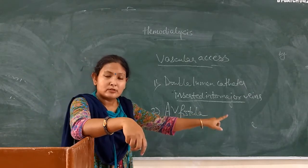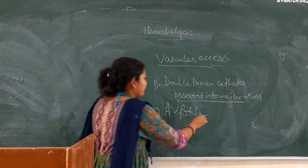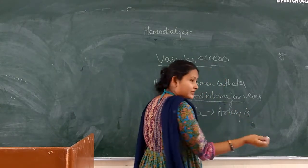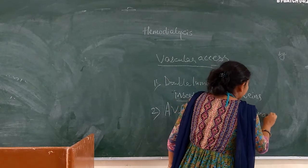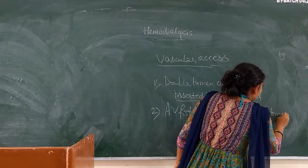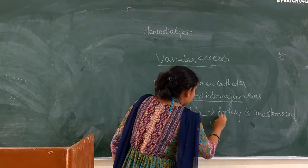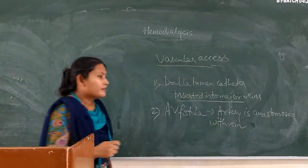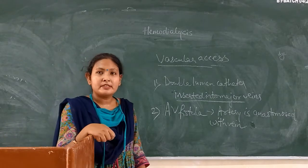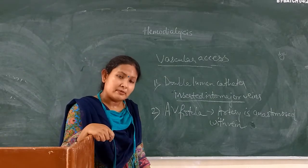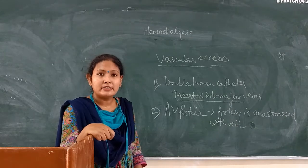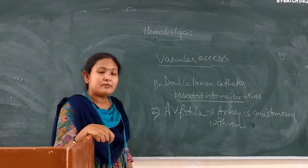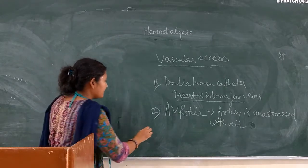It is a surgical procedure and it takes time. For the fistula to be created and to mature, it takes around up to three months. After that, only the fistula can be used for hemodialysis.